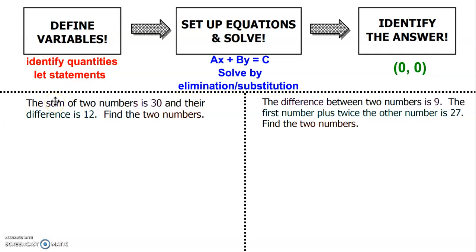The first problem: the sum of two numbers is 30, and their difference is 12. Find the two numbers. Notice I read through the problem once just to get a gist of what the problem is talking about. Now I'm going to go back and read it again. The sum of the two numbers is 30 — sum means to add together, so when I add the two numbers together it's going to equal 30. 30 is our total number.